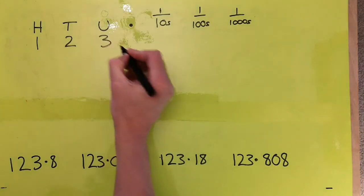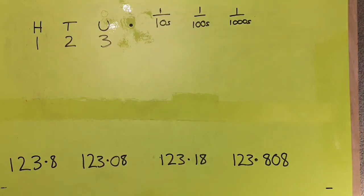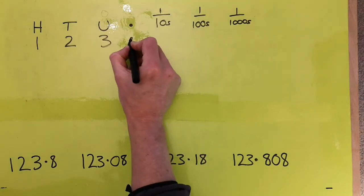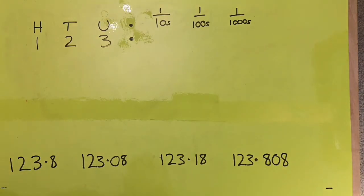And then if we look in the next column along, which is the units, we've got a 3 in everyone as well. So again, at this point, we can't begin to order them at all. So what we now need to do is maybe look in the tenths column.